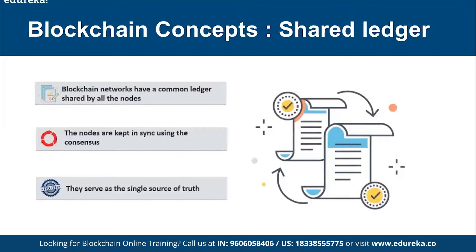Storage in blockchain happens using a concept called a shared ledger — a storage system using blocks. This shared ledger is replicated across the network. Let's say you have a network of 100 hosts: all nodes, which you can consider like servers, are kept in sync using consensus. The ledger serves as a single source of truth, and it is the responsibility of the blockchain network to ensure this ledger is always in sync so everybody sees the same data, avoiding issues caused by network latency.